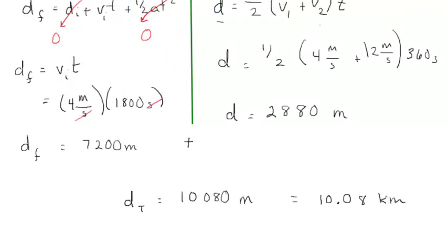So we get the total distance is 10,080 meters, or 10.08 kilometers, which is, my goodness, almost 5 miles. No wonder he was complaining about that parade route.